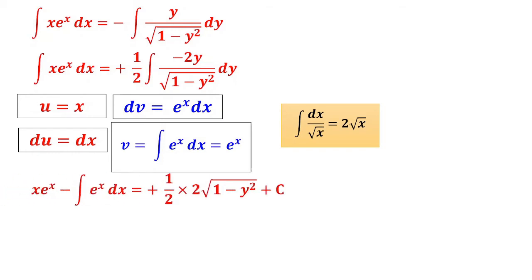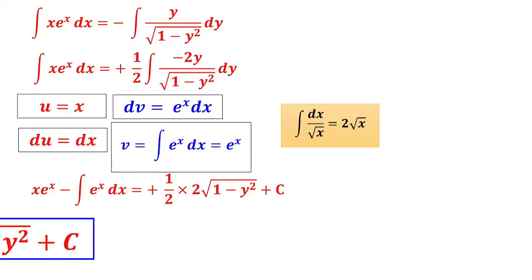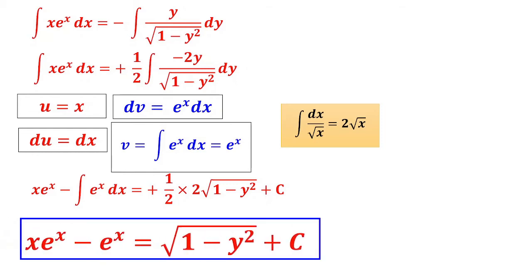Applying integration by parts: u·v − integral v·du = x·e^x − integral e^x dx = x·e^x − e^x. On the right-hand side: (1/2)·2·√(1−y²) = √(1−y²). Therefore the answer is: x·e^x − e^x = √(1−y²) + c.